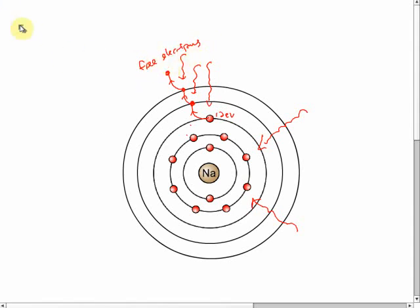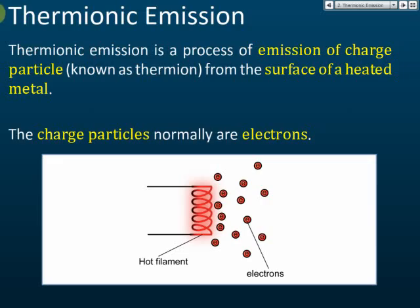So if we heat the metals up to a certain temperature, the electrons may jump out from the atoms of the metal and become free electrons — the metal releases and emits electrons. This process is called thermionic emission.